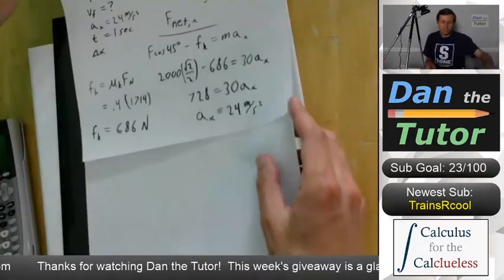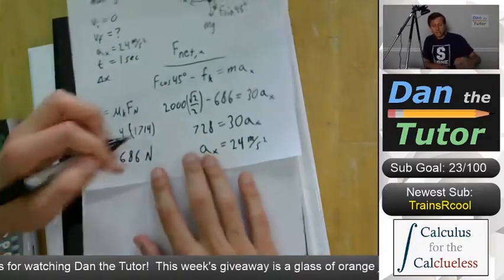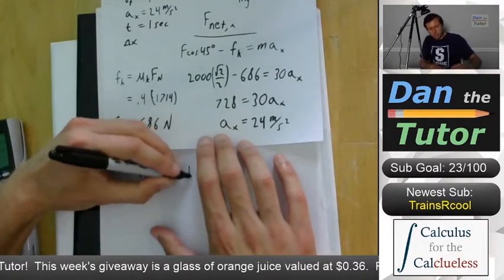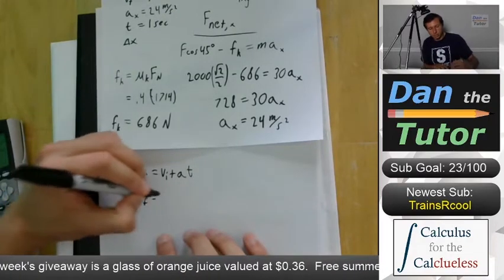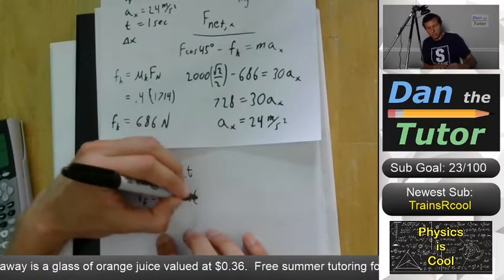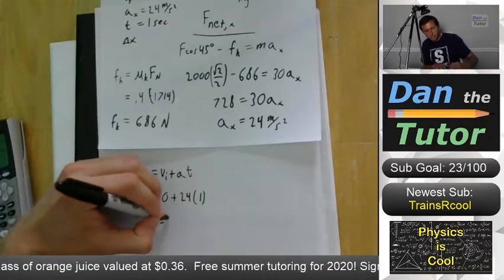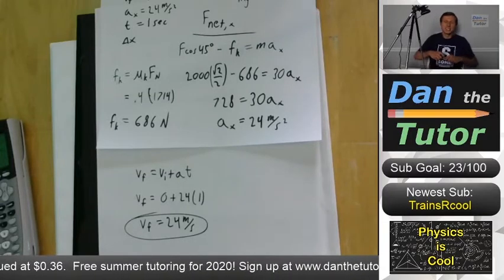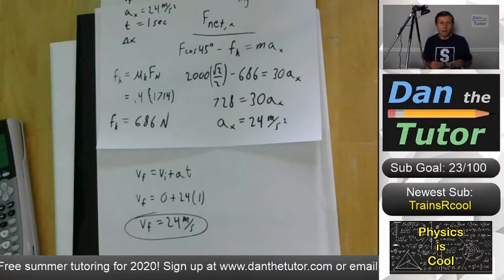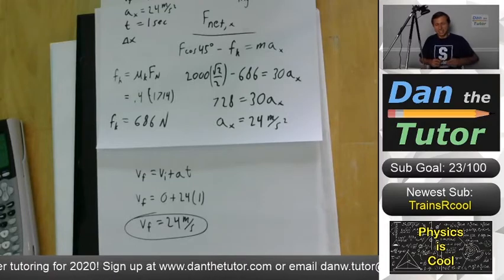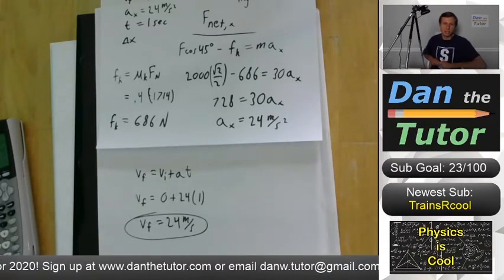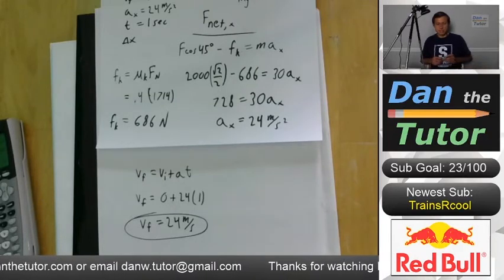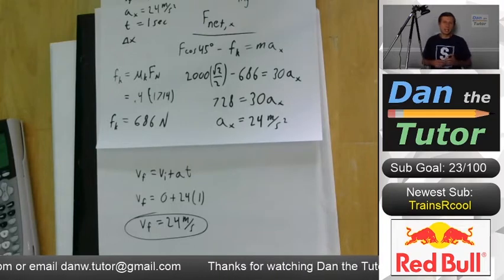Using the kinematic equation v_final = v_initial + a × t: v_initial = 0, a = 24 m/s², t = 1 second. So v_final = 24 m/s. That's roughly 40 miles per hour - which is ludicrous for a lawnmower - but those are the numbers. Part B: final speed is 24 m/s after 1 second of pushing.